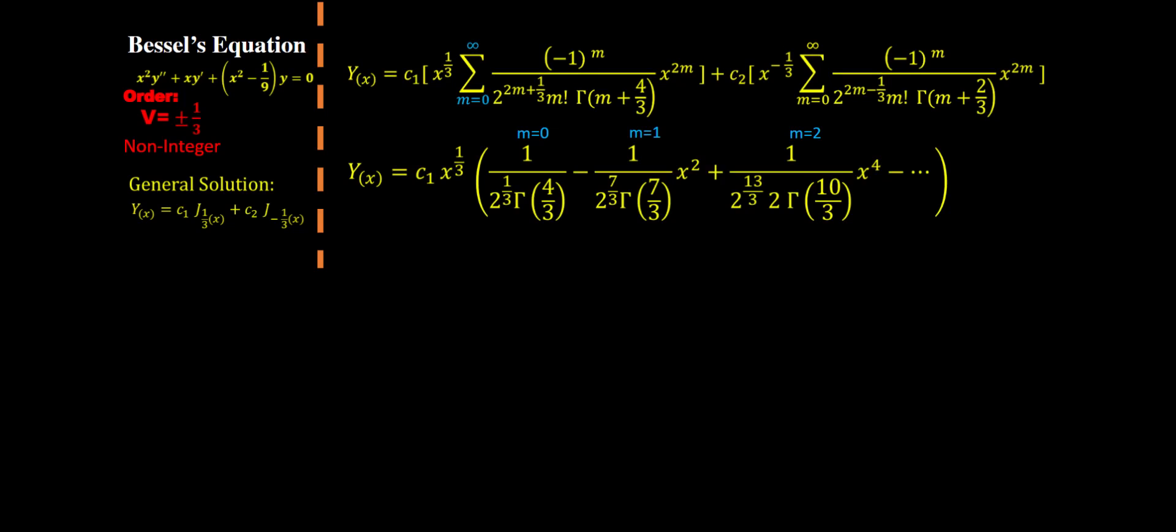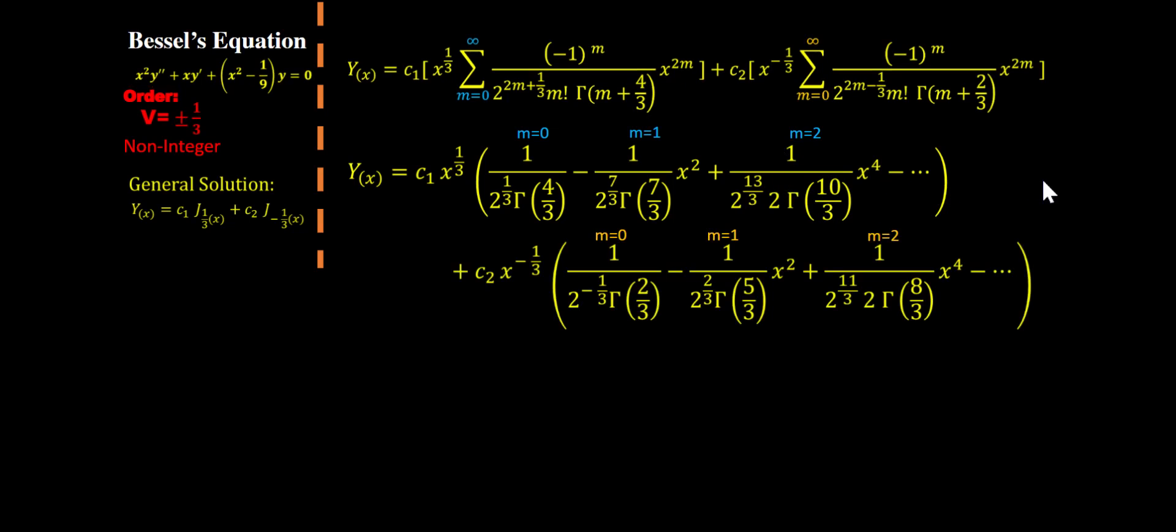Here it is for the first one: c1 x one third times, and in parentheses we can see the terms of the first summation. For the first term m equals zero, this is what we get. When we plug in m equals one we get this, and this is what we get m equals two and so on. For our second summation we can see the resulting terms right here.